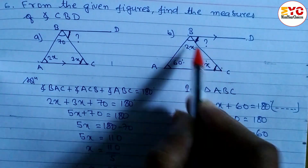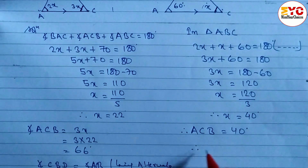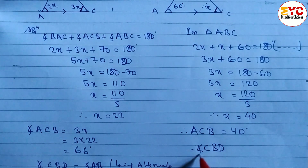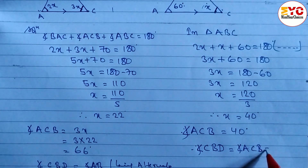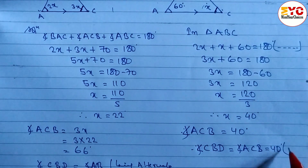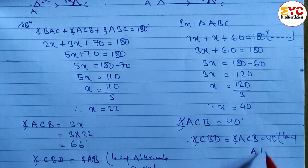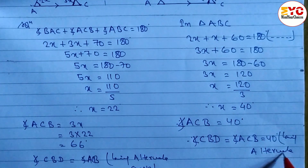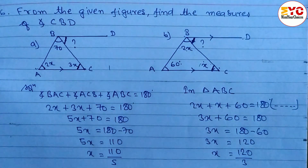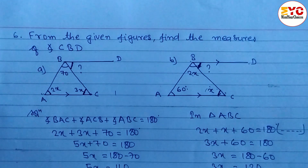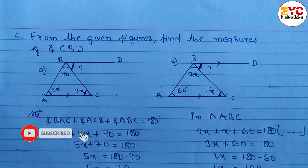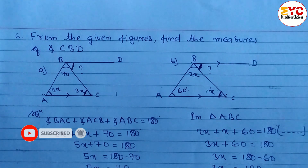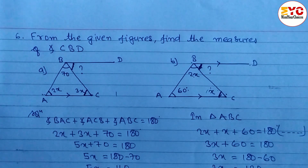Therefore, angle CBD is equal to angle ACB, which is equal to 40 degrees, the reason being alternate angles. You can see the relationship between these two angles is alternate. Hope you understand this video related to geometry and triangles. If you understand, please hit the like button. If you're new to my channel, please consider subscribing and hit the bell button to get notifications of upcoming videos. Thanks for watching till the last — keep supporting and keep sharing.